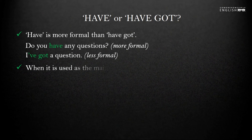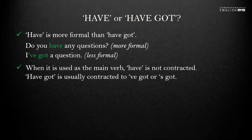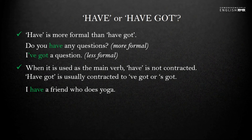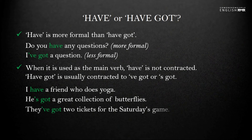When it is used as the main verb, have is not contracted. Have got is usually contracted. We normally say 'I have a friend who does yoga.' But if we want to use have got, we will contract it: 'He's got a great collection of butterflies,' 'They've got two tickets for Saturday's game.'